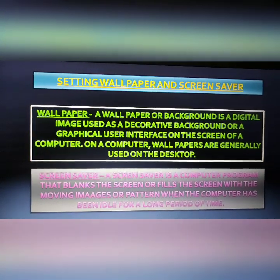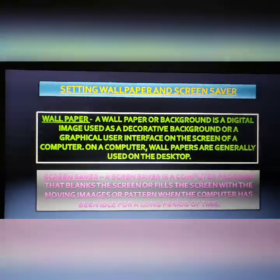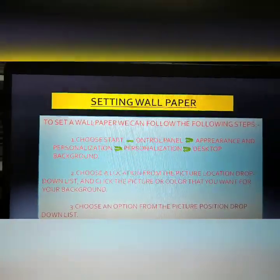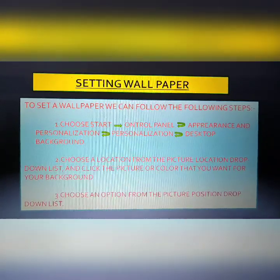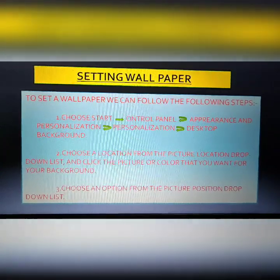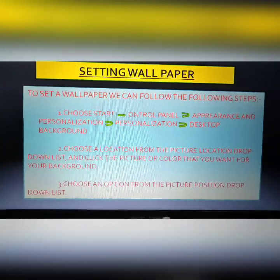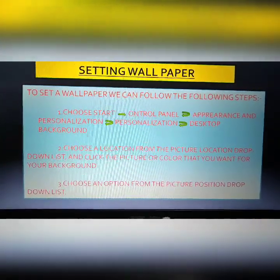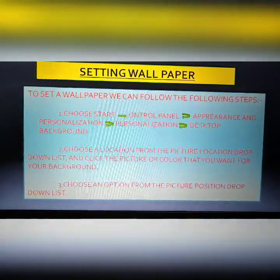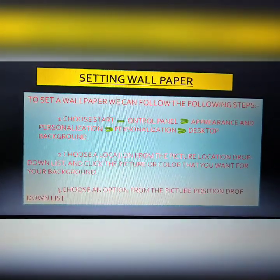Now we will learn how to set a wallpaper. To set a wallpaper, follow these steps: First, choose Start, then go to Control Panel, then Appearance and Personalizations, then Personalizations, and then Desktop Background. Second, choose a location from the picture location drop-down list and click the picture or color you want for your background.